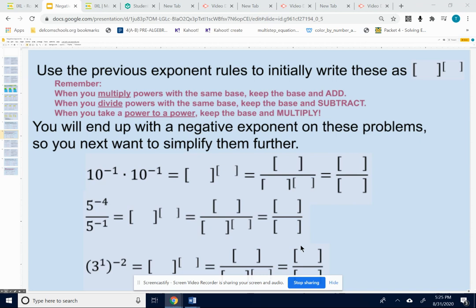So after you do that, you need to simplify the negative exponent so that you don't have a negative. You want to get a positive exponent in the denominator.